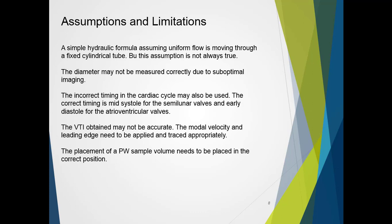The incorrect timing of the cardiac cycle may also be used. One of the above assumptions is the cross-section area is fixed. However, this does change through systole or diastole. The correct timing is mid-systole for the semilunar valves and early diastole for the atrioventricular valves. The velocity time integral obtained may not be accurate. The modal velocity and leading edge need to be applied and traced appropriately.